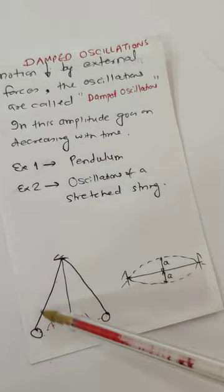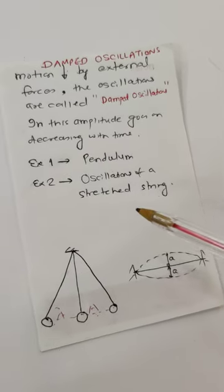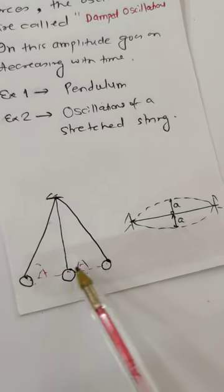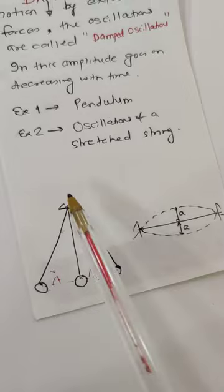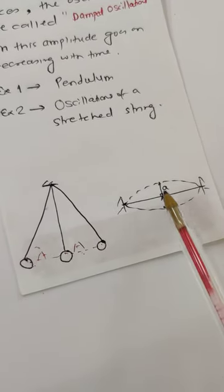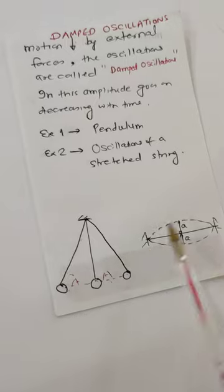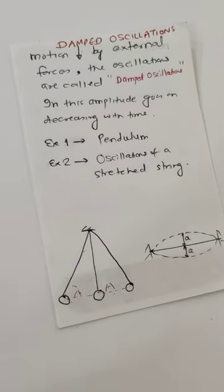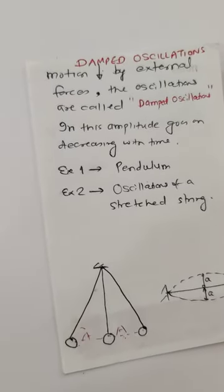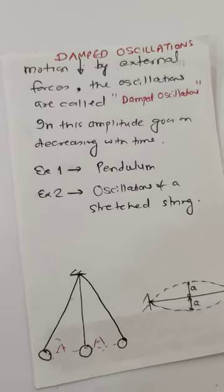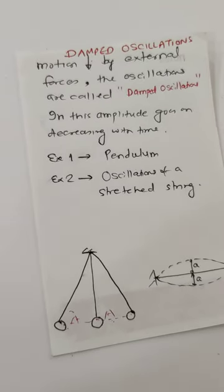Example one: pendulum. Example two: oscillating string. Now you will ask me, what are the external forces? Here you can say air resistance and friction at the support. Similarly, air resistance and friction at the support are the main causes of damped oscillation. Basically, damped oscillations are practical oscillations in which the amplitude of the oscillating body keeps on decreasing because of external forces.